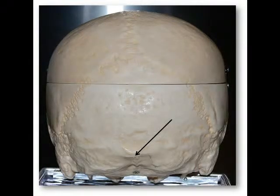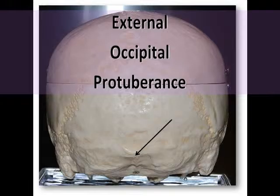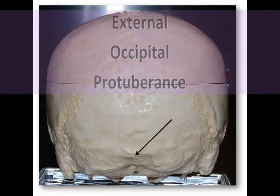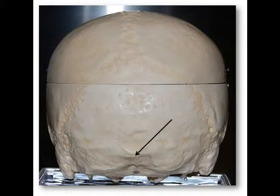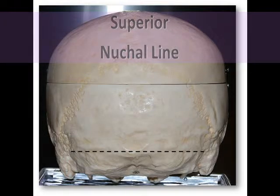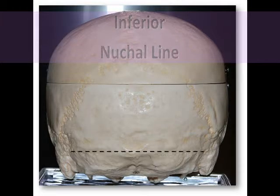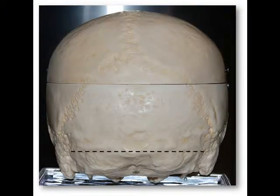Reach to the back of your head and feel the bump located just above your neck. That is known as the external occipital protuberance. It's an attachment point for the ligamentum nuchae, which connects to the seventh cervical vertebra, C7, to help support the head. Our last two bony landmarks on the occipital bone are the superior and inferior nuchal lines, which are two pairs of curved ridges that serve as areas of muscle attachment.